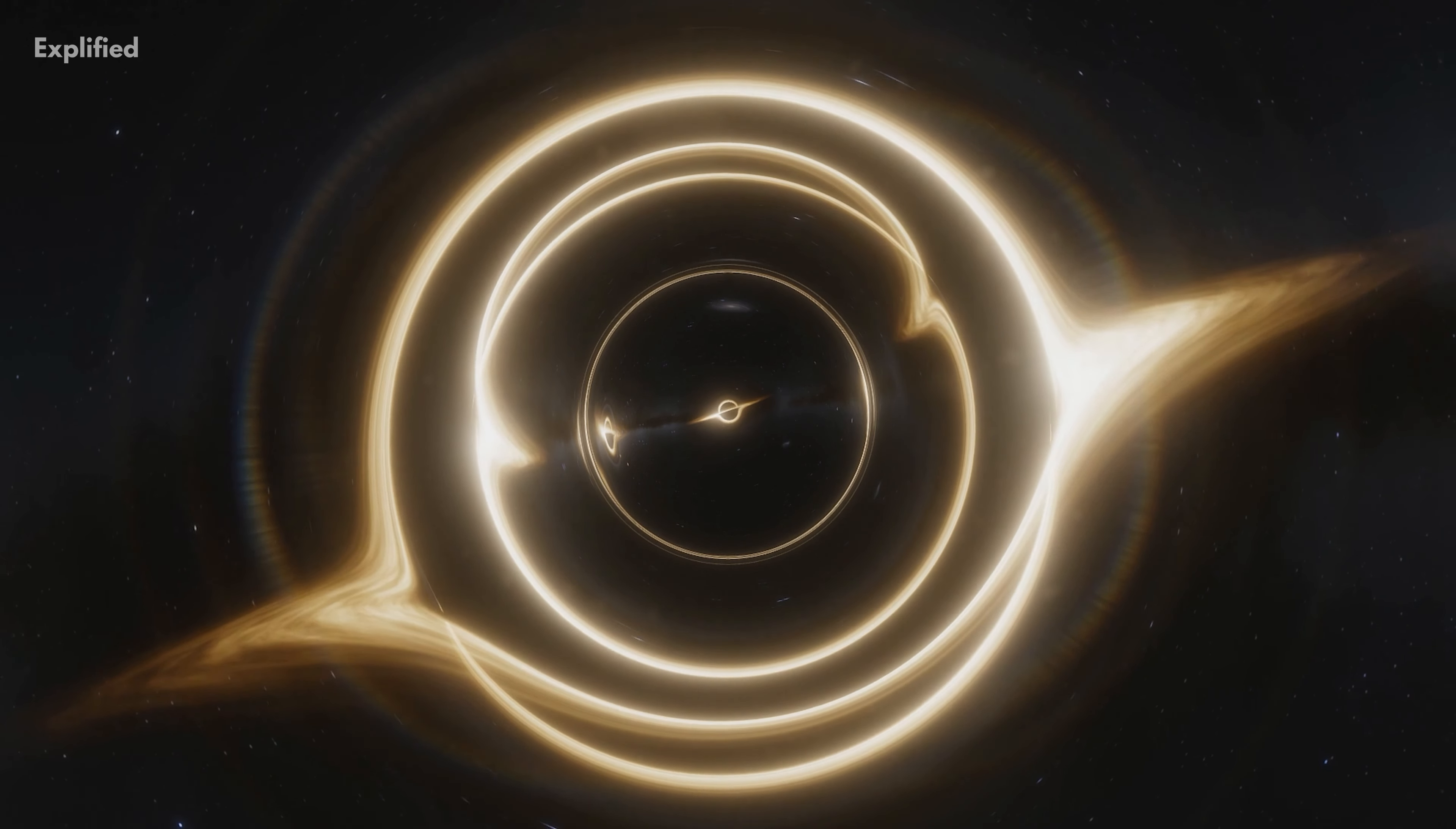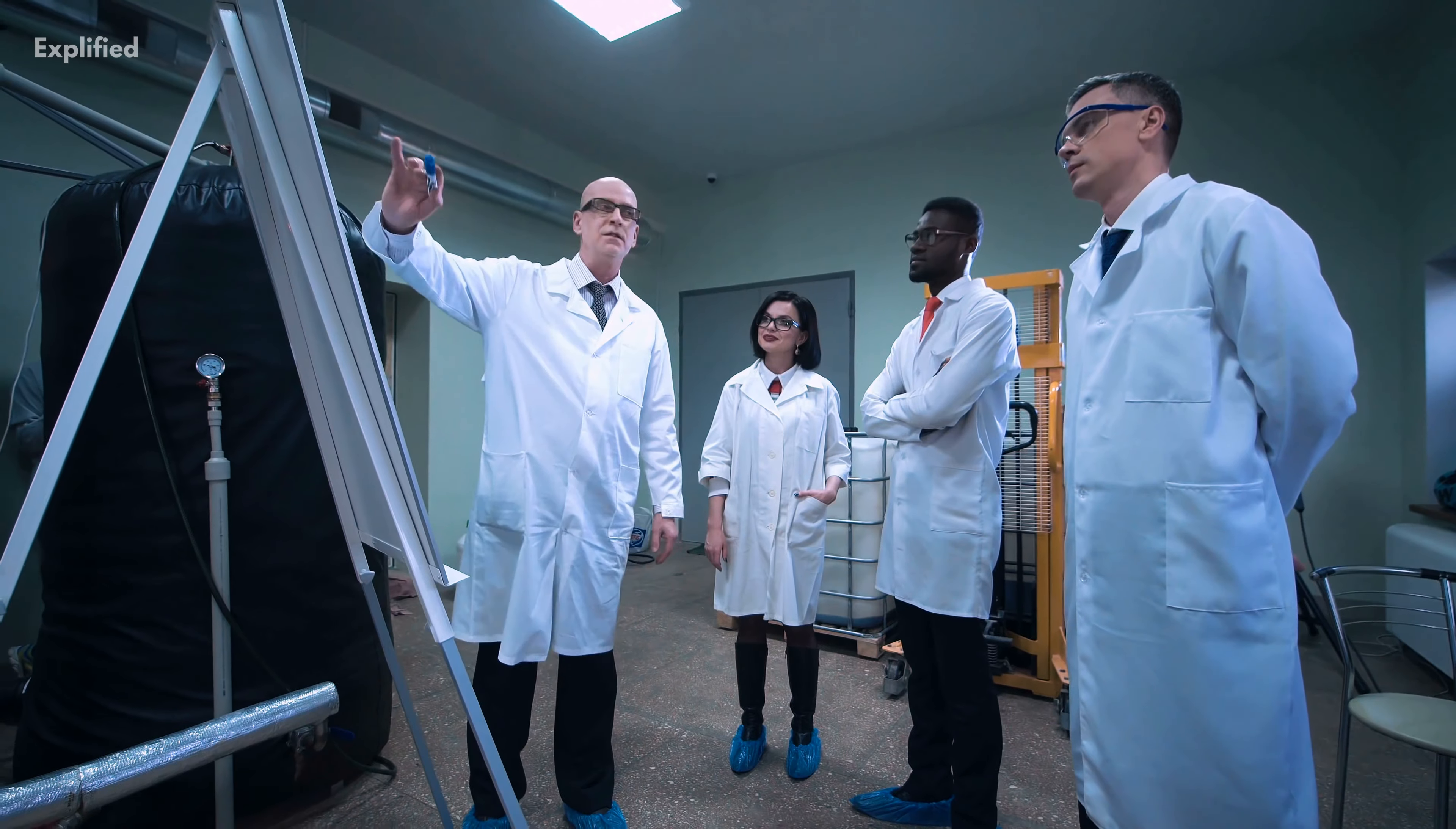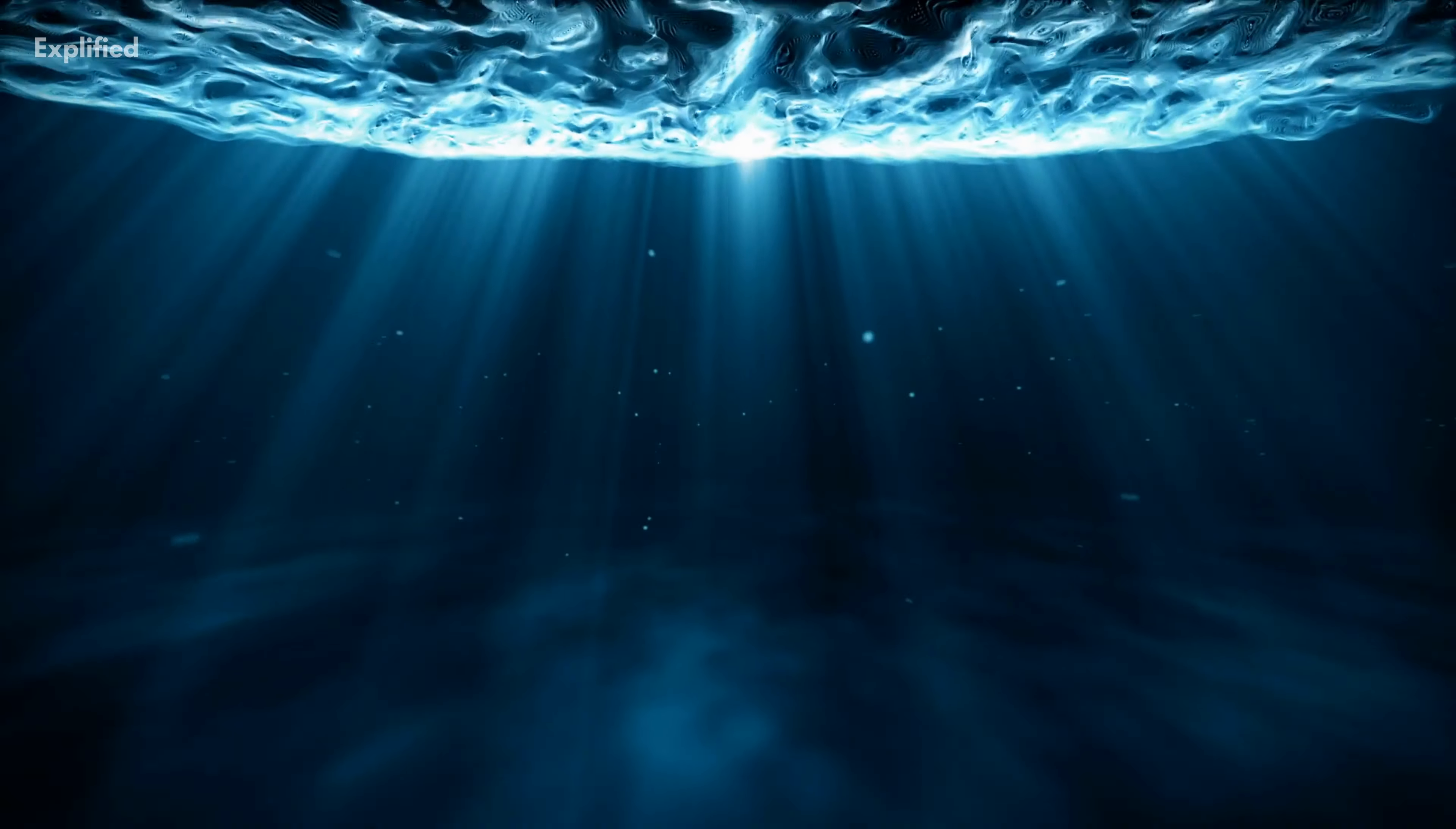While the theory of relativity assumes that the speed of light in vacuum is a universal constant, it also demonstrates that the speed can never be measured. According to numerous physicists, you can't measure how long it takes light to travel from point A to point B because of relativity.